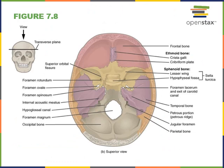Here we have a superior view of the cranial floor. We can see the temporal bone in purple on both sides, and the internal acoustic meatus on each side, where the vestibulocochlear nerve carries the senses of hearing and equilibrium from the inner ear into the brain.